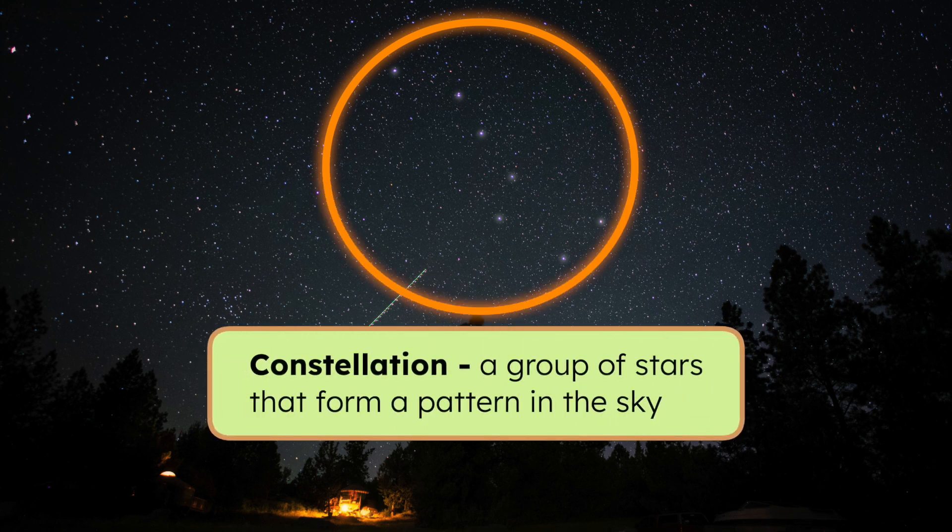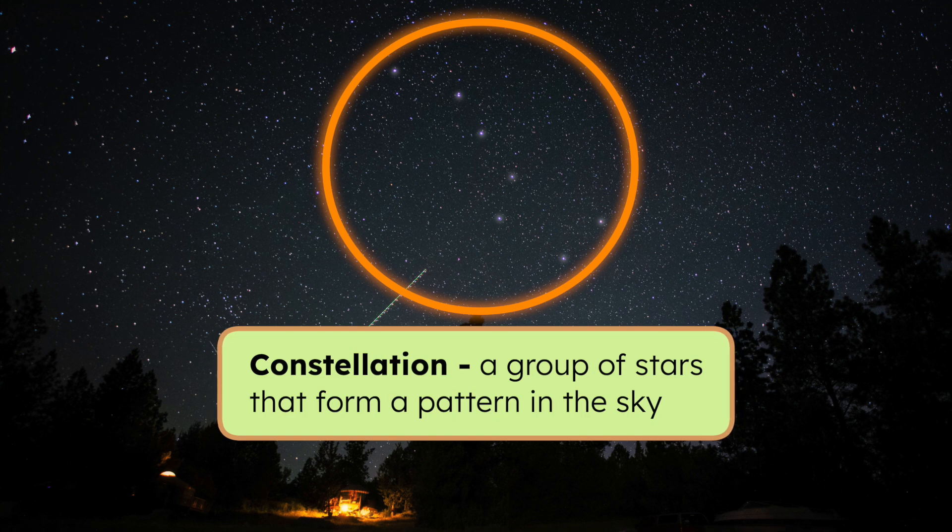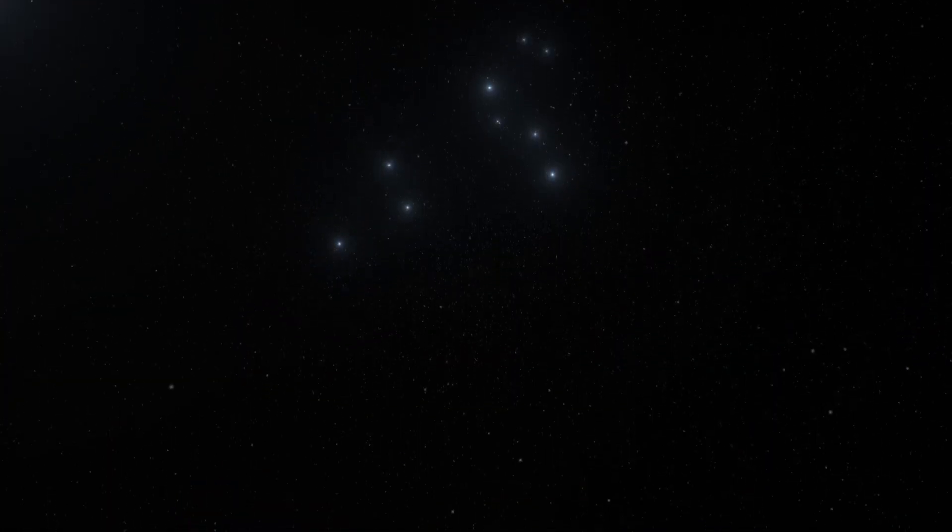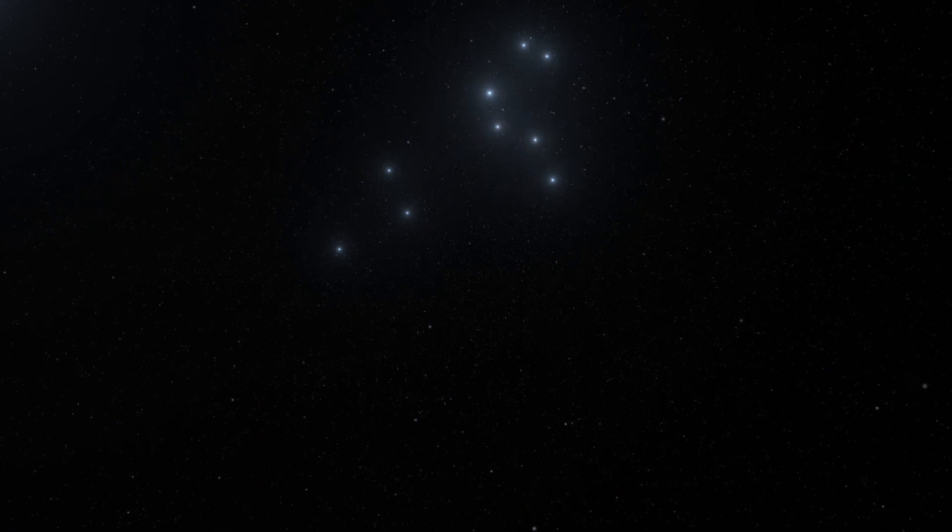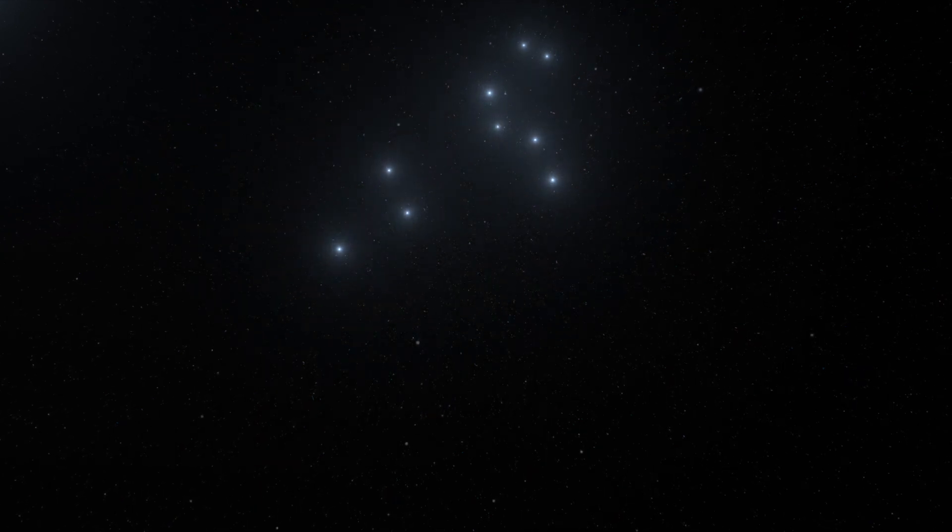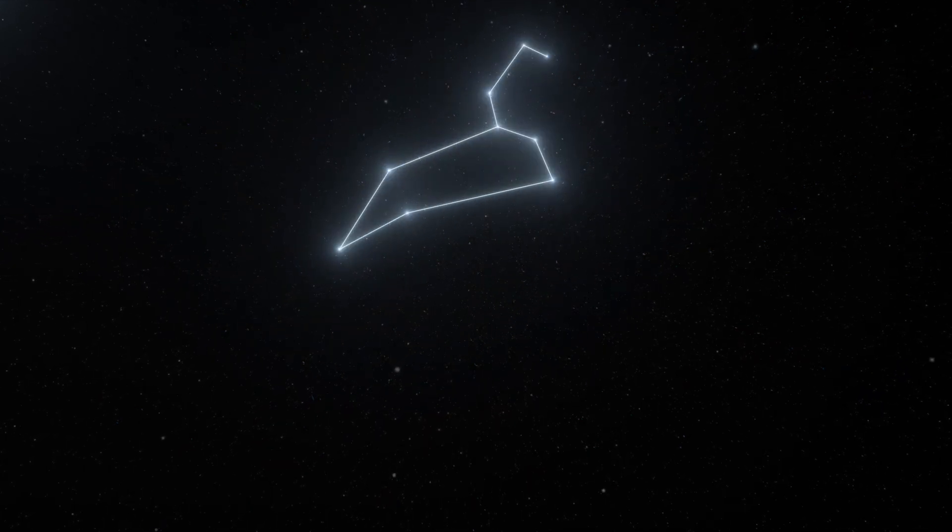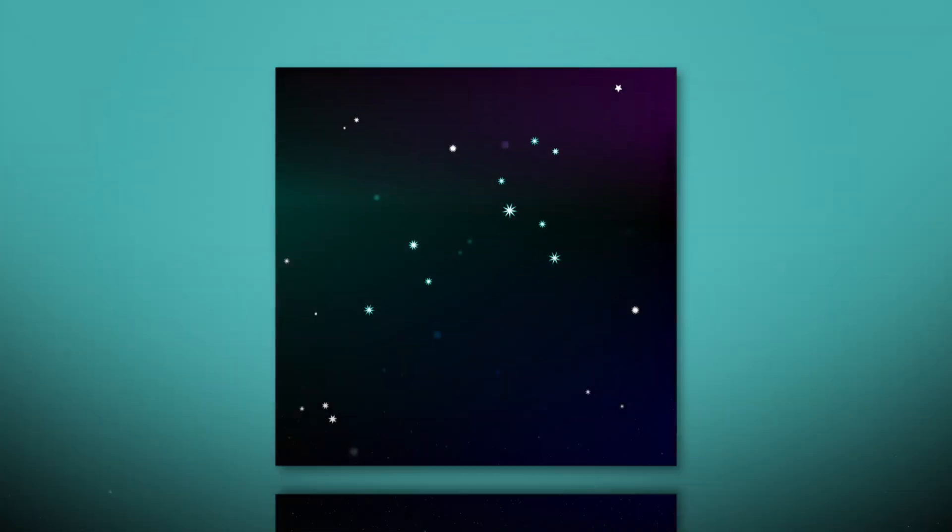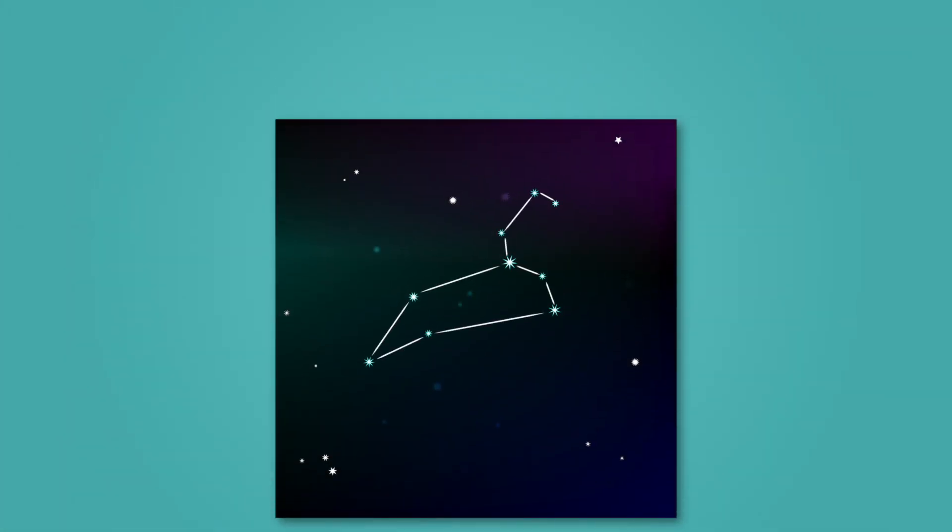A constellation is a group of stars that form a pattern in the sky. Looking at constellations is a bit like playing connect the dots in the sky. People use their imaginations to link the stars into pictures they could recognize. For example, some noticed a shape that looked like a lion. This became the constellation Leo.